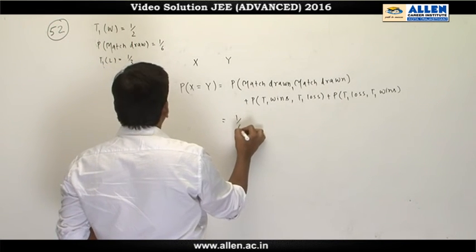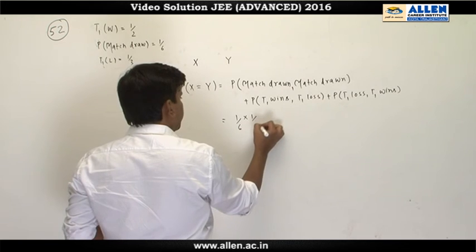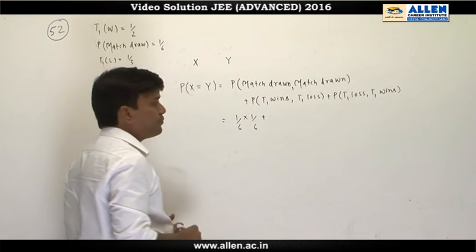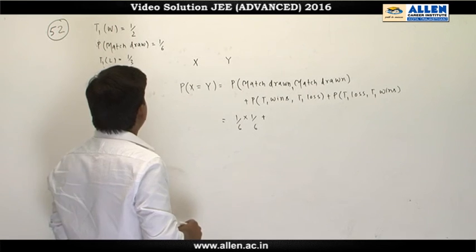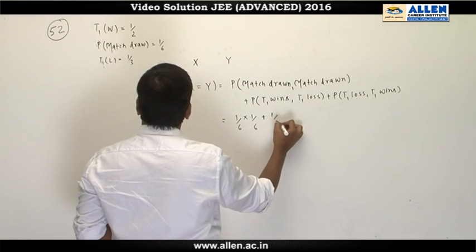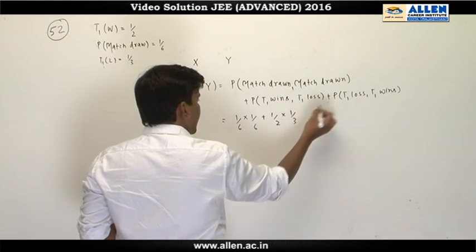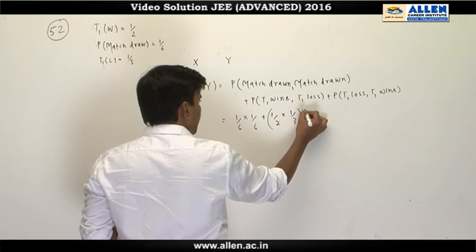this is 1 by 6 into 1 by 6, plus we can see T1 wins, T1 wins this is half into 1 by 3, and again this is going to be same so this is multiplied by 2.